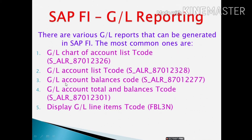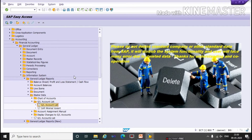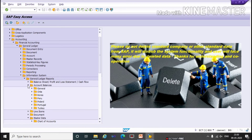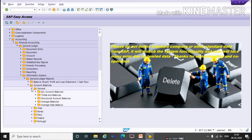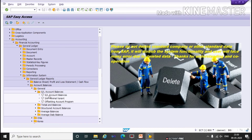The third report is GL Account Balance — the T-code is shown on screen. Now we will create it through the menu path. Click on Accounting, Financial Accounting, Journal Ledgers. Under Journal Ledgers click on Information System, then Journal Ledger Reports. Under this click on Account Balances, then Journal, then GL Account Balances — double-click on the first one, GL Account Balances.